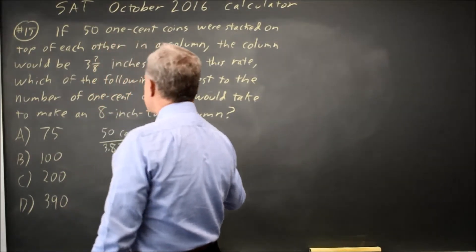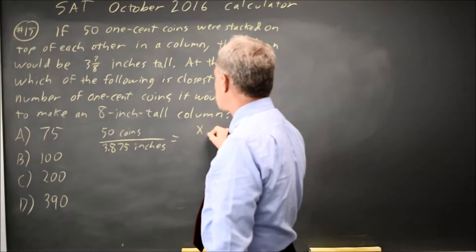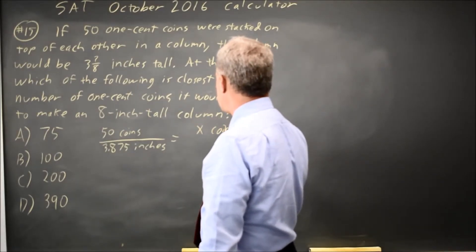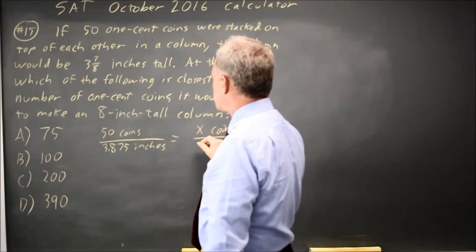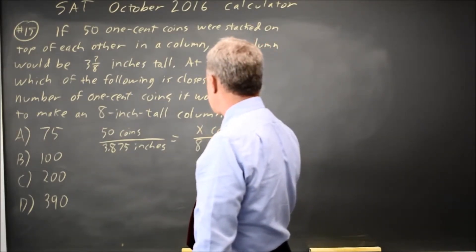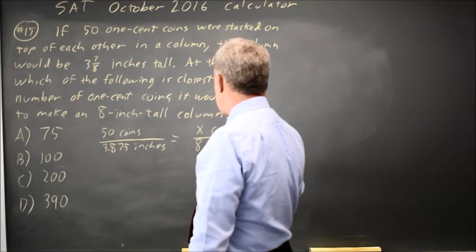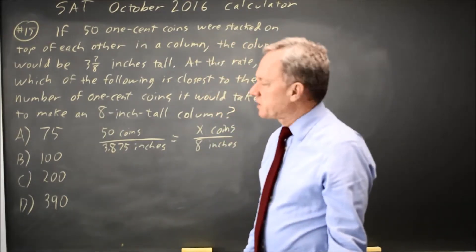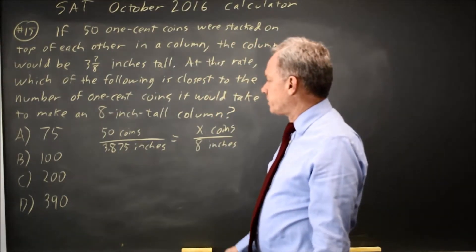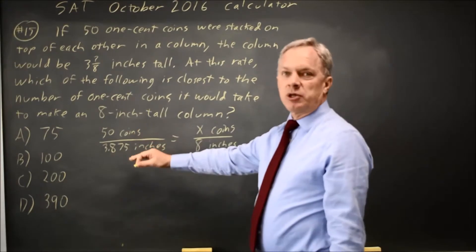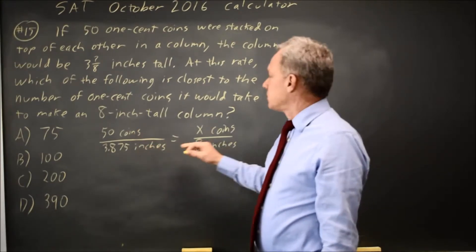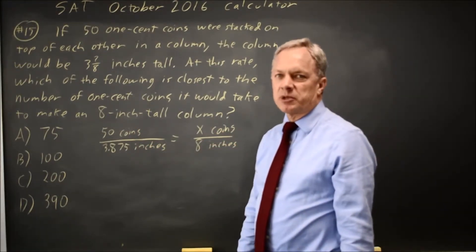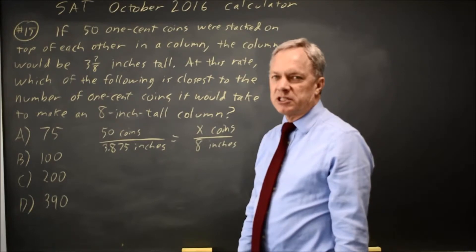They're asking how many coins — I'm going to call that x coins — over 8 inches, where x is the number of coins it takes to make a stack 8 inches tall. I like putting in the labels for my quantities to make sure I haven't flipped one side of my ratio.